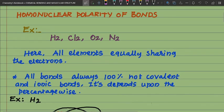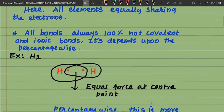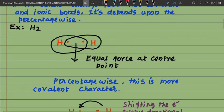All bonds are not 100% covalent or ionic — it depends on the percentage. For example, in the H₂ molecule, both hydrogen atoms have equal force of attraction between them, so equal force at the center point. Percentage-wise, this is called a covalent bond because it has more covalent character.